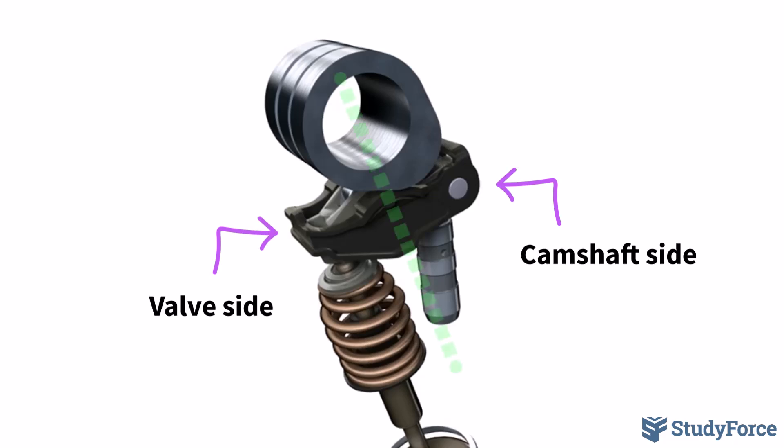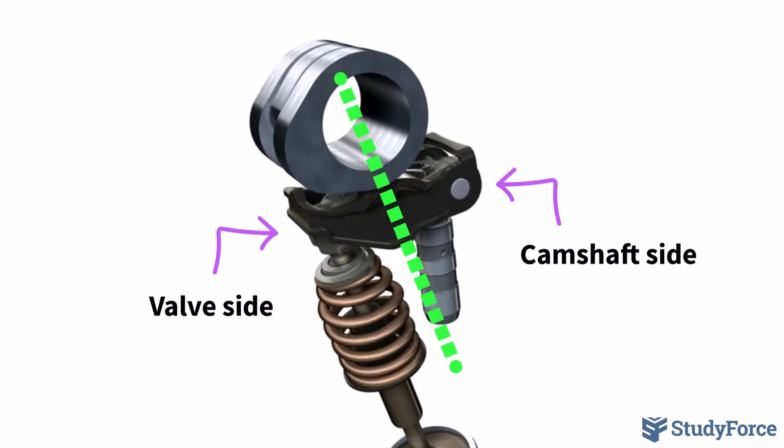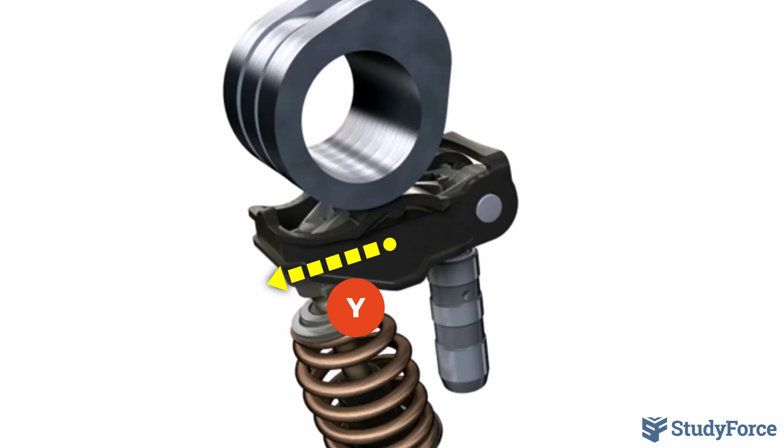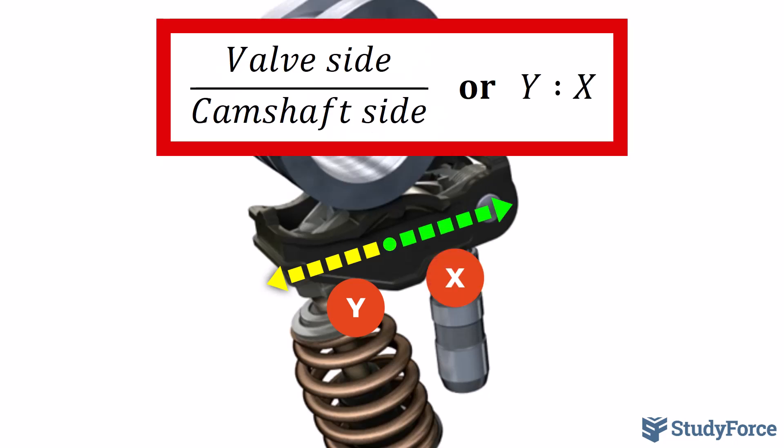Because the rocker arm has different lengths on each side of the pivot, this difference is expressed as the rocker arm ratio. To determine the rocker arm ratio, divide the distance from the pivot to the valve side by the distance from the pivot to the camshaft side.